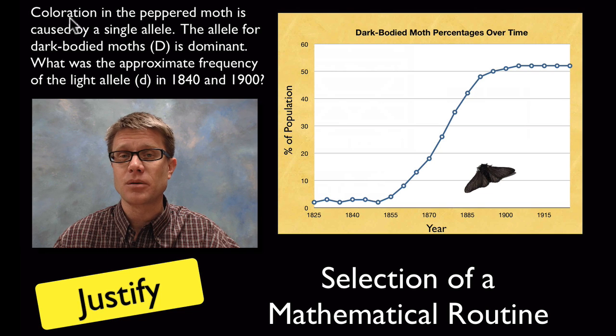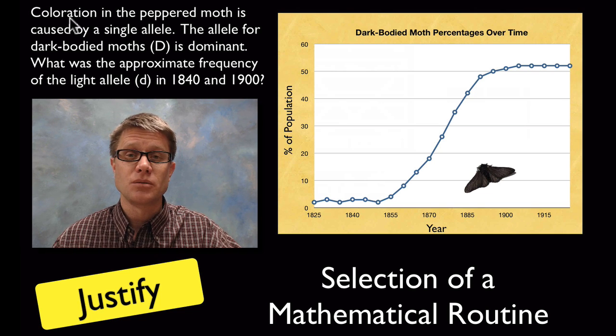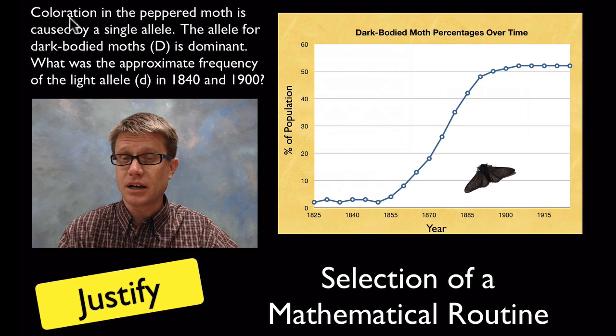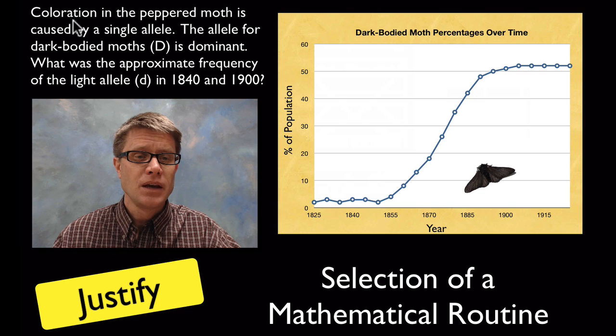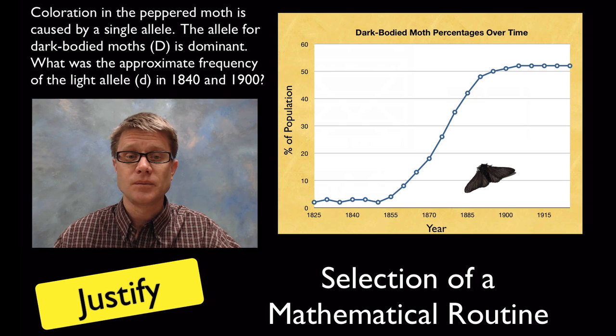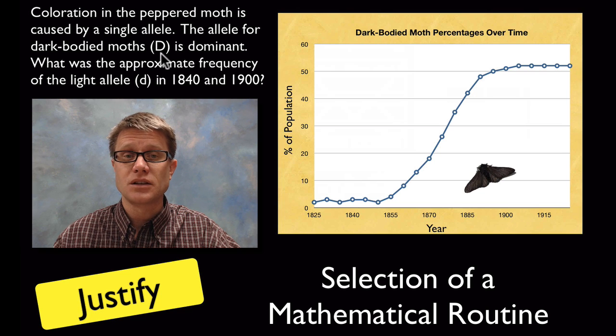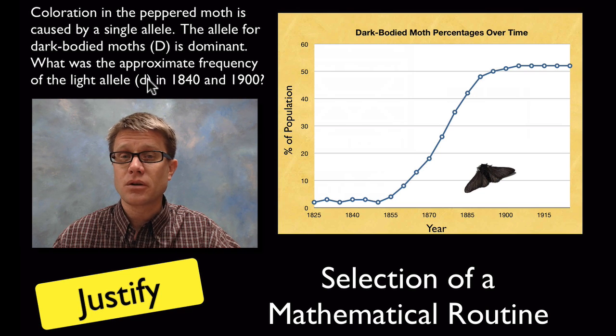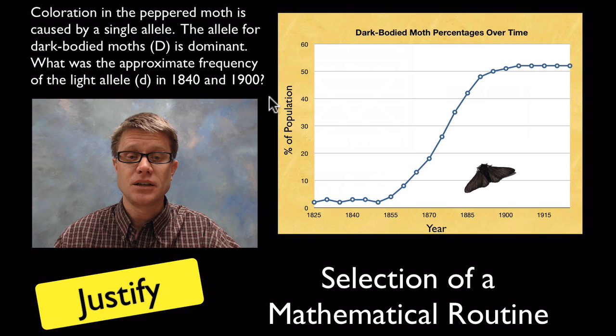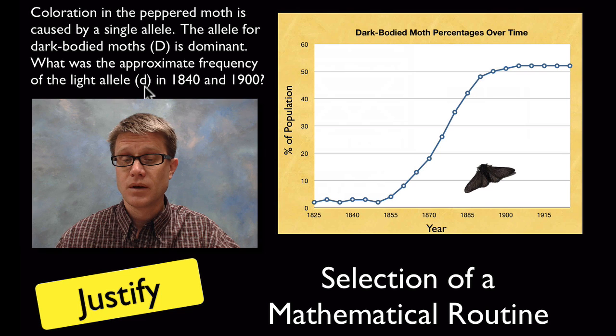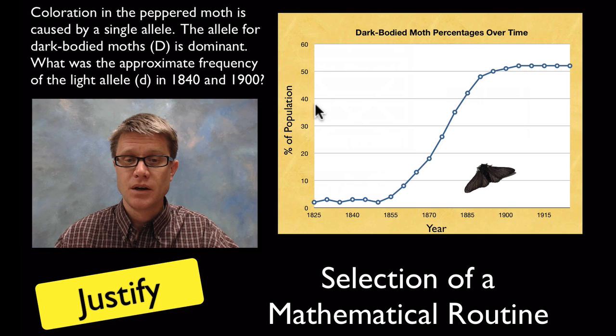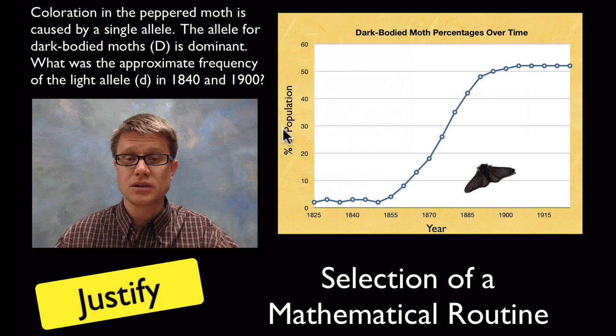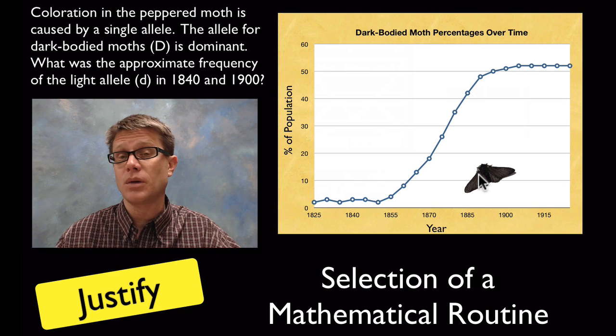What we're looking at is coloration in the peppered moth. Remember that's famous in evolution because it showed the moths turning from a light color to a dark color with the industrial revolution and a change in coloration on the trees. Coloration in peppered moths is caused by a single allele. The allele for dark bodied moths is big D and it's dominant. What they're asking is what's the approximate frequency of the light allele (d) in 1840 and 1900. In this case that would be Q.